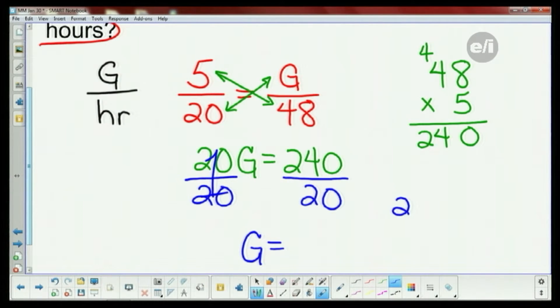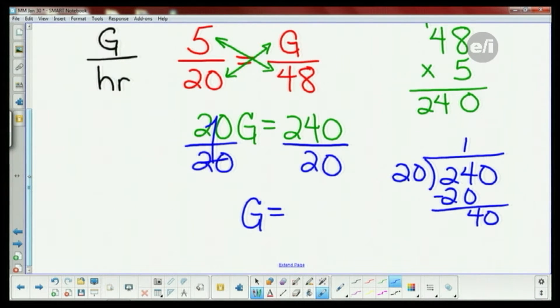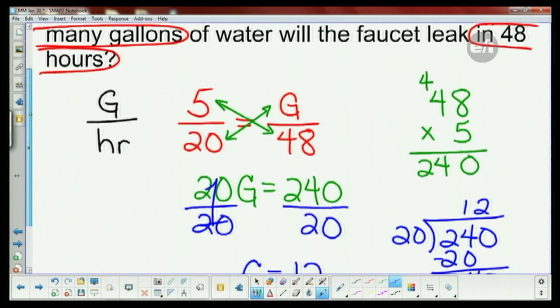So we know G is alone here. And now we're just going to do long division. How many 20s are in 24? 1. Take away the 20. Bring down the 4 and the 0. How many 20s are in 40? 2. 40. 0. So I know I'm going to lose 12 gallons.